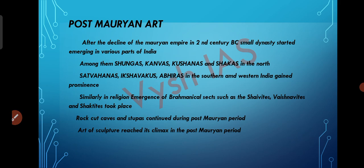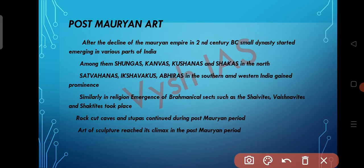In today's video, we will be discussing the post-Mauryan art. After the decline of the Mauryan Empire in the 2nd century BC, there was an emergence of small dynasties in various parts of India. Among them, Shungas, Kanvas, Kushanas, Shakas in the north and Satavahanas, Ishvakas, and Abhiras in southern and western India gained prominence.